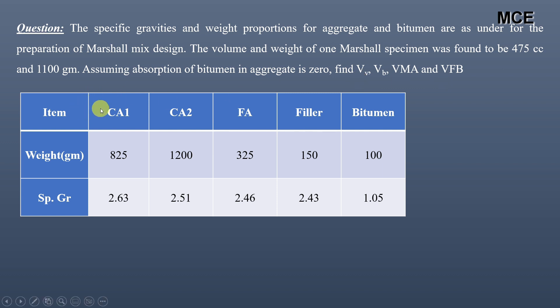You can see the table for the Marshall mix design, in which the first item is coarse aggregate number 1 and its weight is given. Similarly coarse aggregate 2, fine aggregate, filler and bitumen. We have been given the weight of each component and the specific gravity.